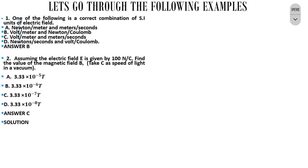How did we get that? We use the expression E equals to CB, where E represents electric field, C is the speed of light, and B is the magnetic field. Since we were asked to find the magnetic field, we make B the subject: B equals to E over C. Then we substitute the given values — 100 for E and the speed of light constant for C — and when you divide, you get the correct option C.